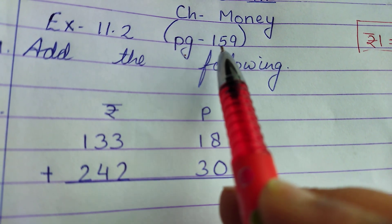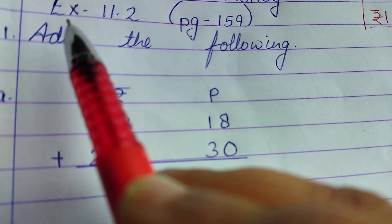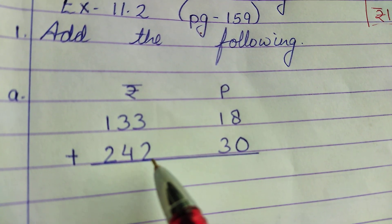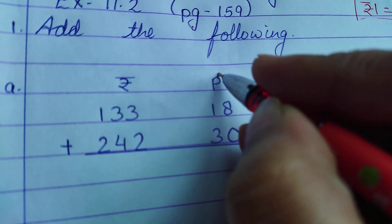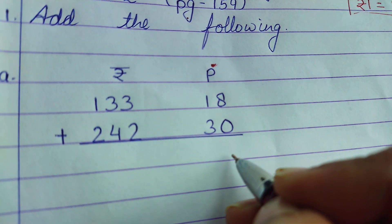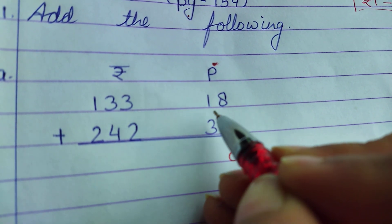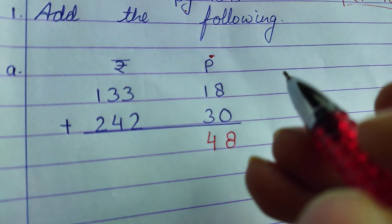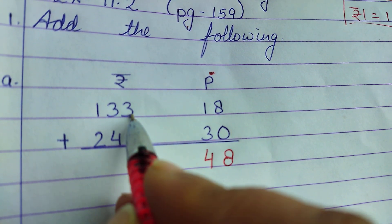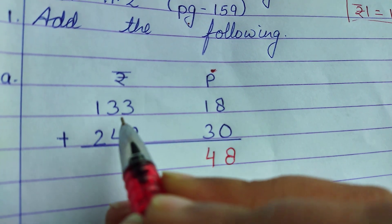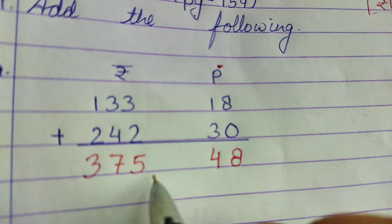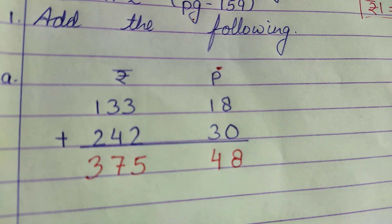The question is from your maths book, page number 159, Exercise 11.2, Question 1 — Add the following: (a) Rupees 133, 18 paise + Rupees 242, 30 paise. First we add the paise column: 8 plus 0 is 8, and 1 plus 3 is 4 — so 48 paise. Then the rupees column: 3 plus 2 is 5, 3 plus 4 is 7, and 1 plus 2 is 3. So the answer is Rupees 375 and 48 paise.